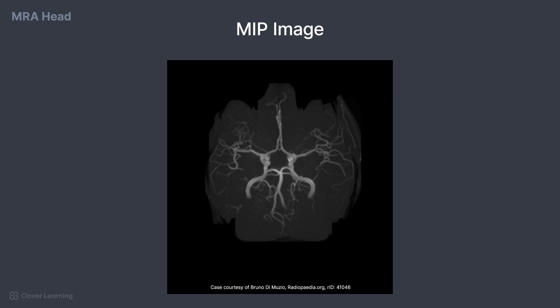MRA scans clearly demonstrate the arterial system in the head, also known as the Circle of Willis. Let's look at some important structures on MIP images of these studies. For the following images, the MIP has been turned in a way to demonstrate all of the vessels.